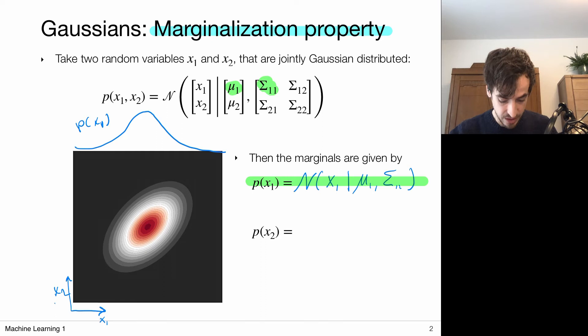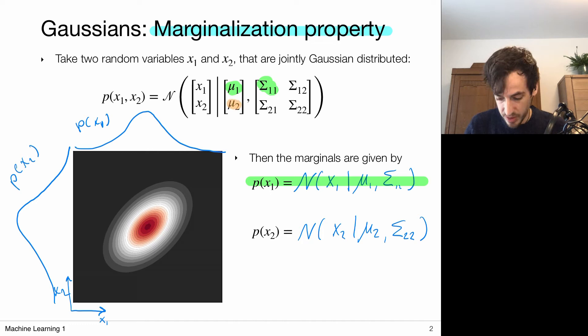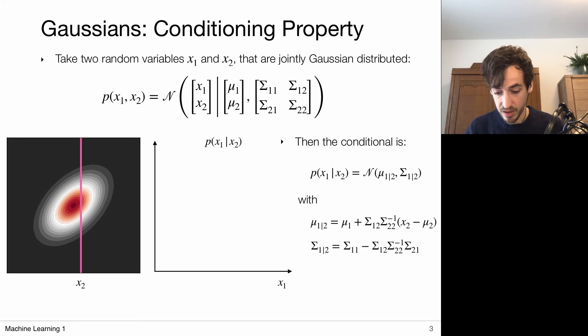The same holds for the second random variable. If I marginalize out x1 and project to that margin, then the distribution for x2 is also simply a Gaussian with the corresponding mean mu2 and covariance sigma22. So if I have this joint distribution with mu2 for the mean component of the second random variable and the corresponding part of the covariance matrix, then my marginal p(x2) is simply given by that Gaussian. It's actually not too complicated to derive these results, though I'm not going to do that here — for that I refer to Bishop, chapter 2.